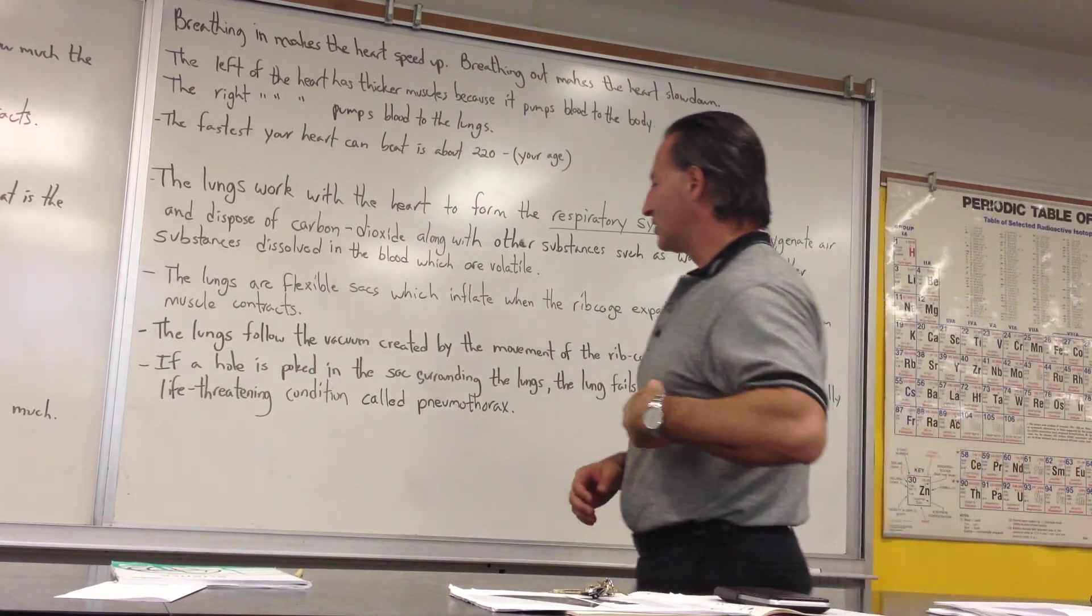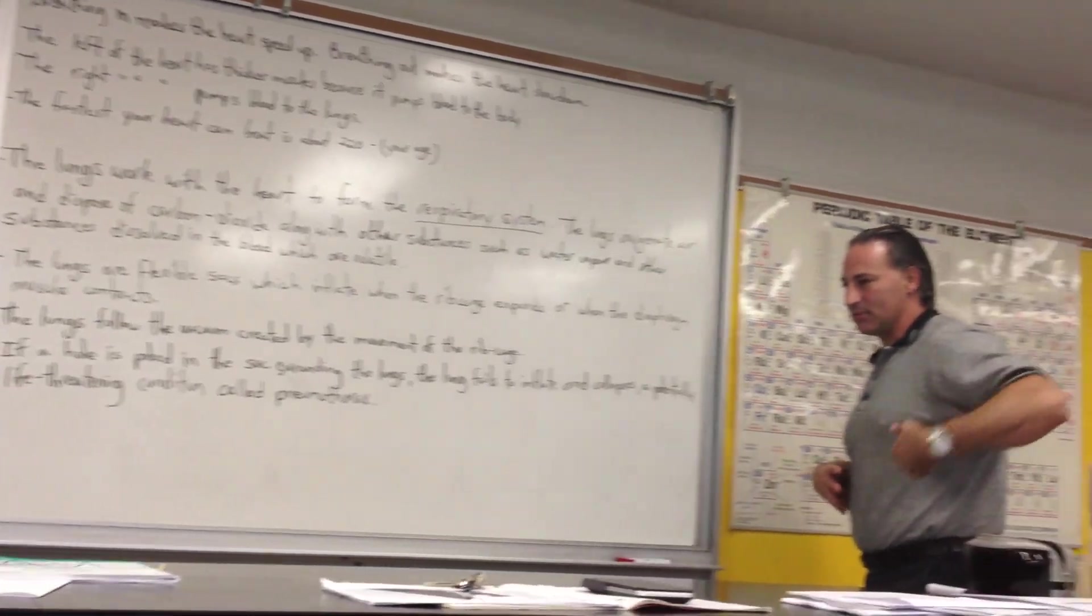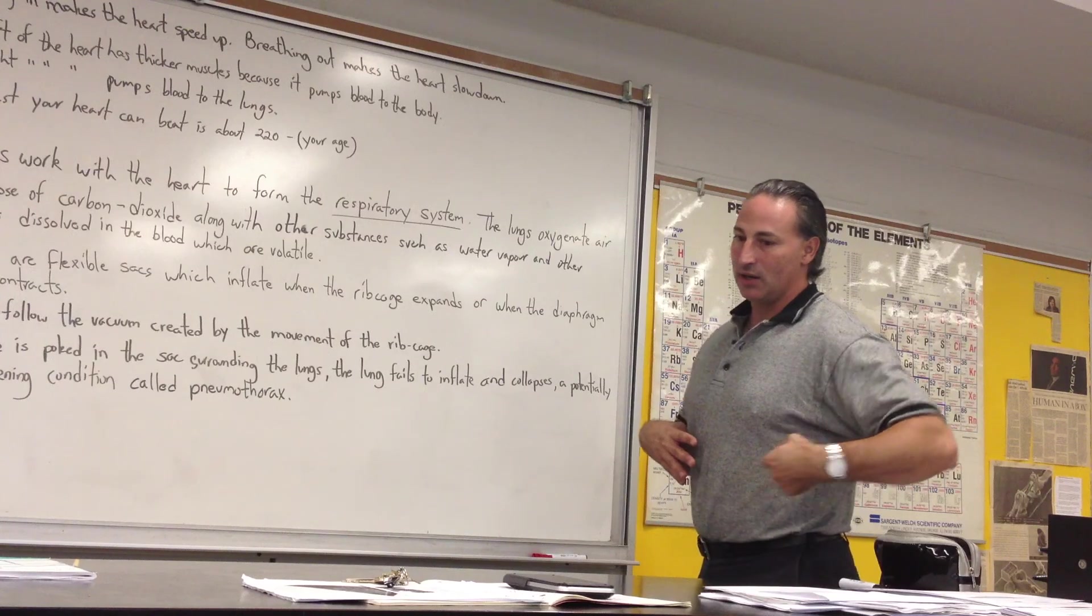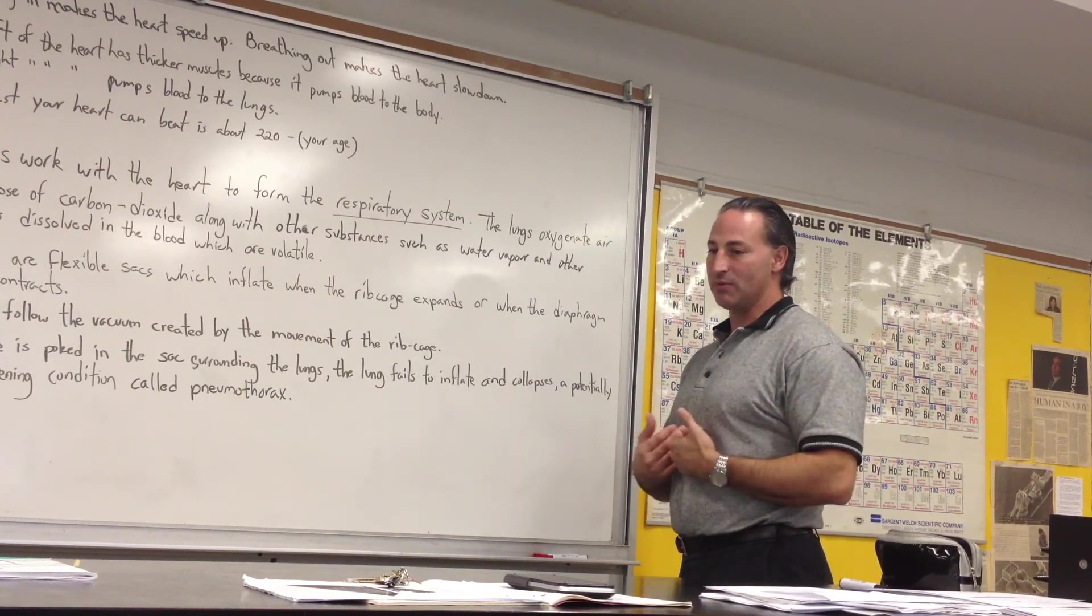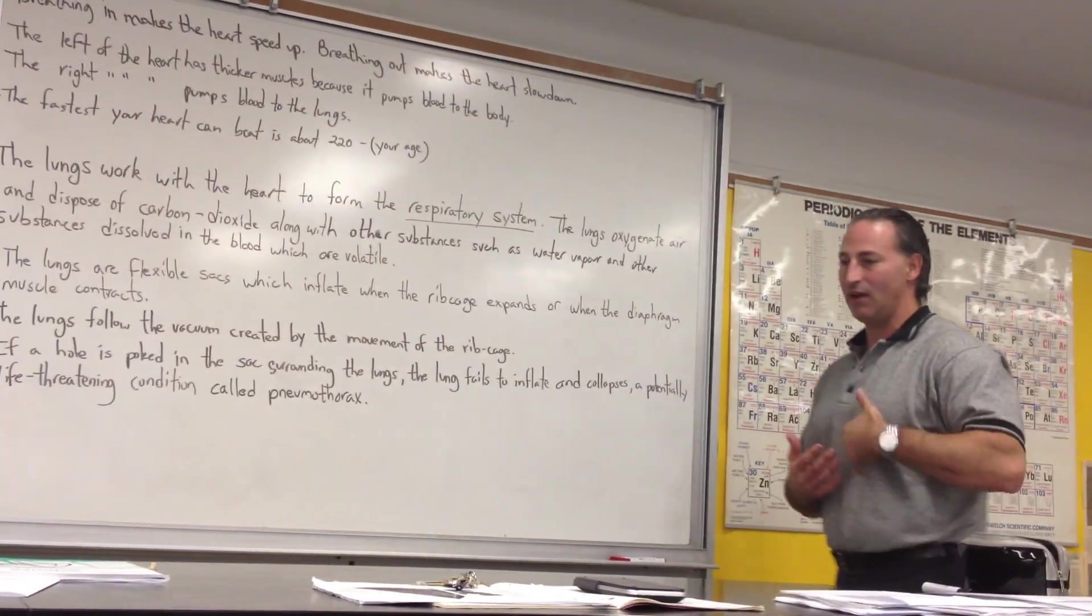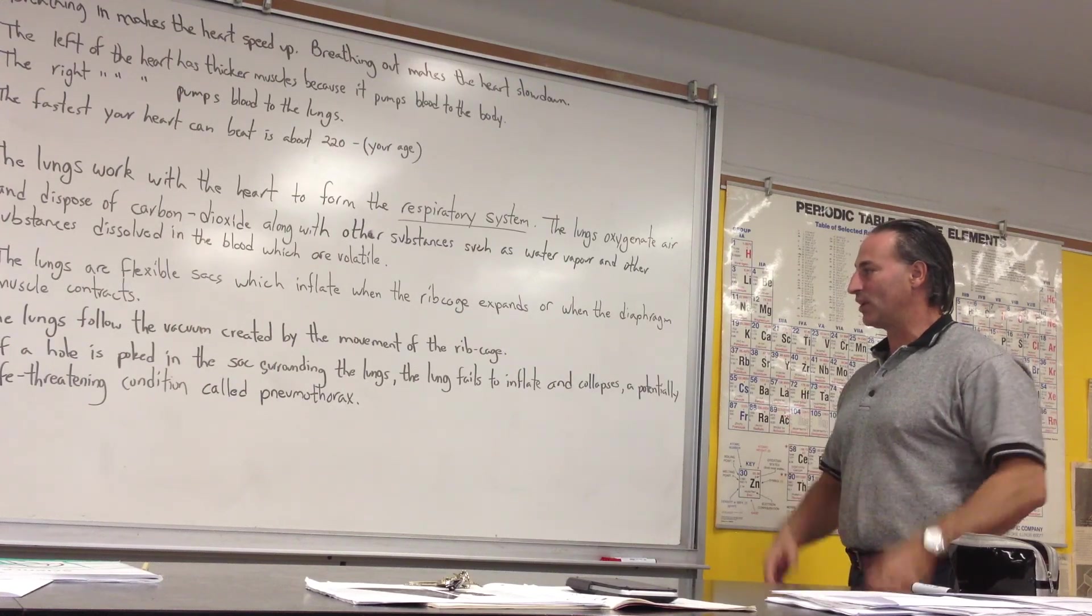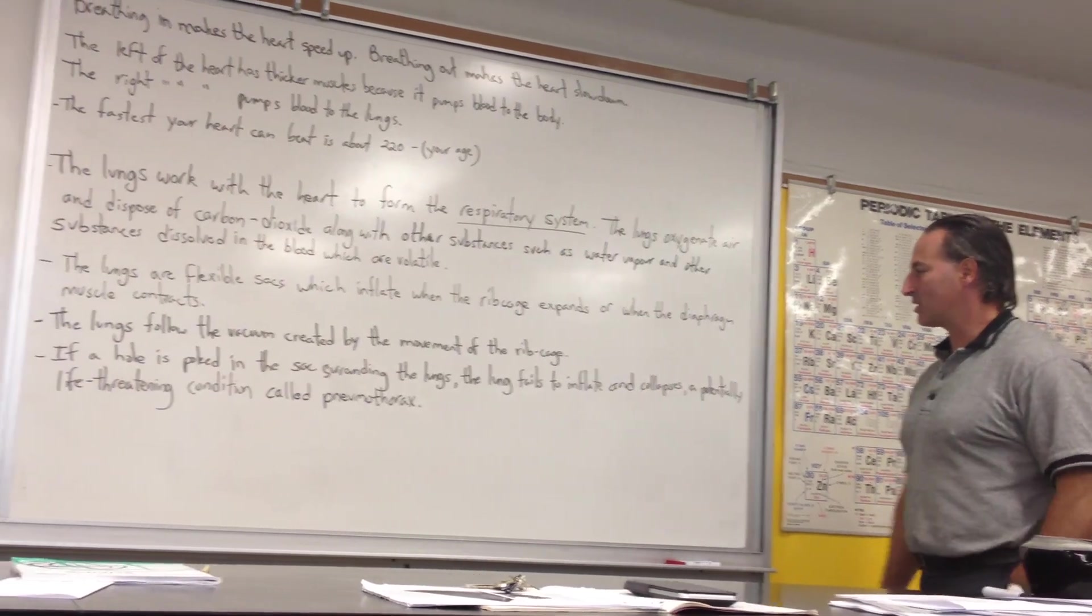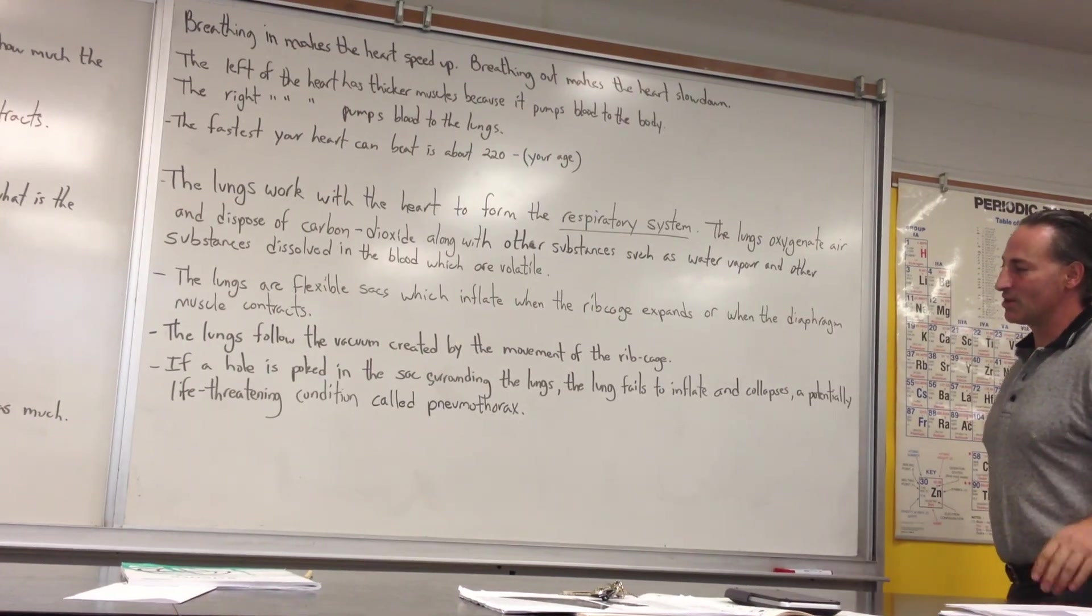Now, if a hole is poked into the sac surrounding the lungs, say if somebody gets a stick poking through their ribs, and it causes air to enter into that area under the ribcage, but above the lungs, then you get what's called a collapsed lung, because the air enters in, and there's no longer the vacuum that helps the lungs to inflate. And that's what you call a collapsed lung. It's a potentially life-threatening condition. The medical name is pneumothorax.